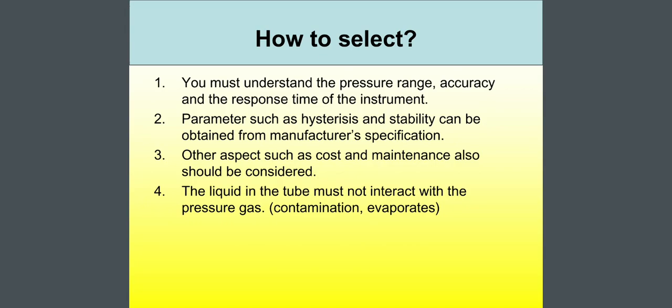So, how to select? Number one, you must understand the pressure range, accuracy and the response time of the instrument. Number two, parameters such as hysteresis and stability can be obtained from manufacturer's specification. Number three, other aspects such as cost and maintenance also should be considered. Number four, the liquid in the tube must not interact with the pressure gas, that means contamination and evaporators. So, these four things or these four steps you have to need to select the proper pressure measuring devices.